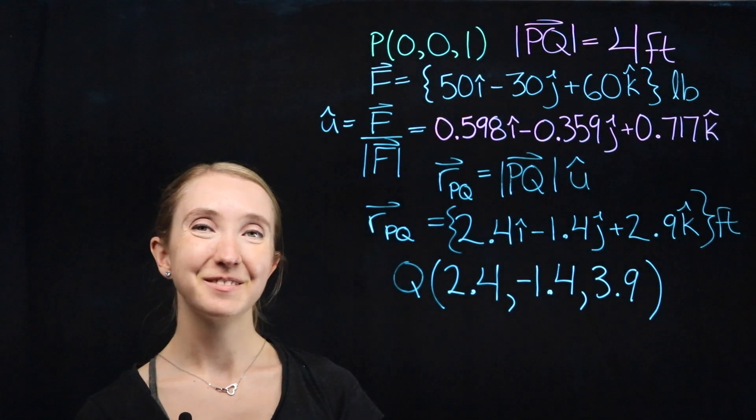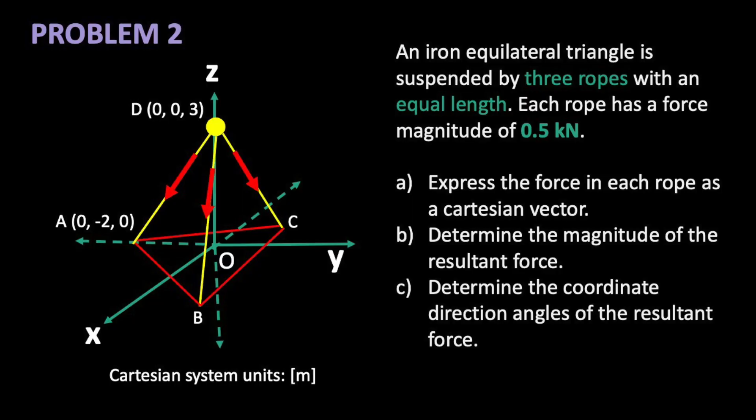That's our answer! Great work guys! An iron equilateral triangle is suspended by three ropes with equal length. Each rope has a force magnitude of 0.5 kN. This problem has three parts.